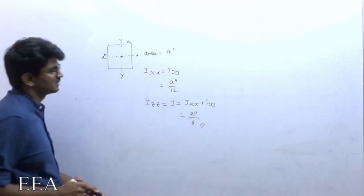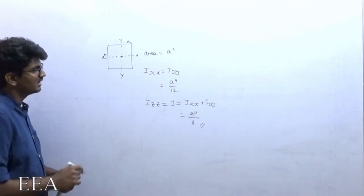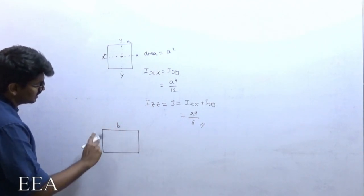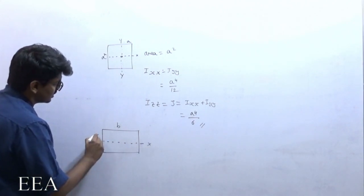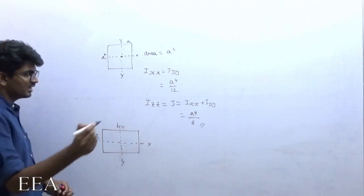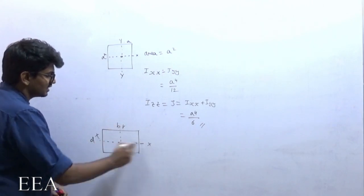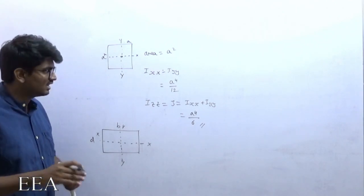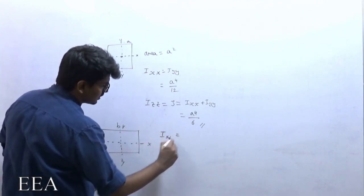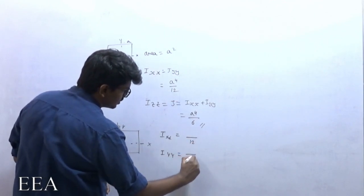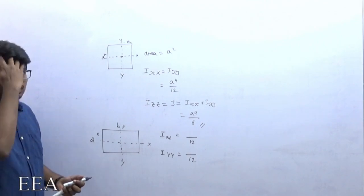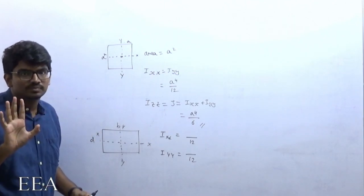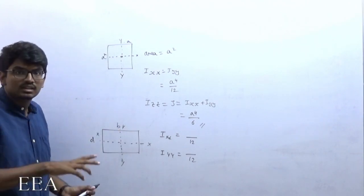Next is a rectangle with width b and depth d. The X-axis is along the width, Y-axis along the depth, Z perpendicular. Area = b · d. For both Ixx and Iyy the denominator is 12. The numerator contains both b and d, where one is cubed and the other is to the power of 1.